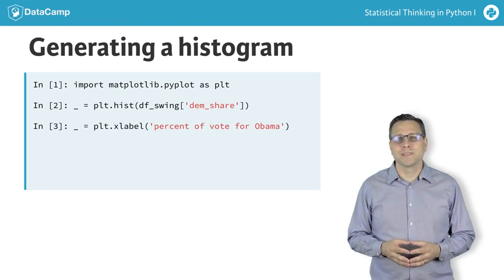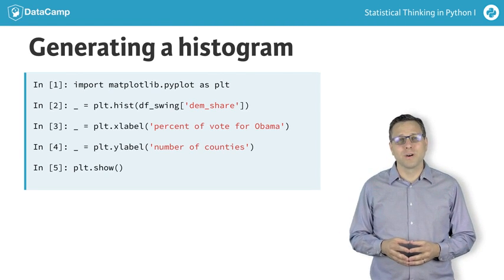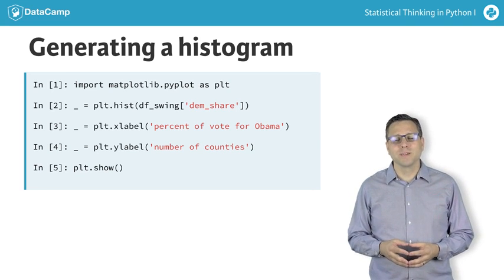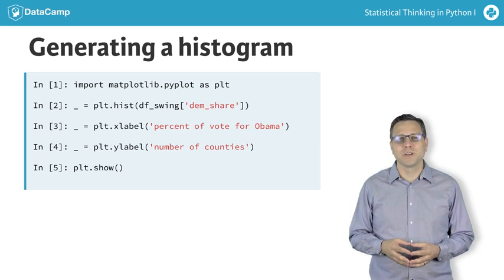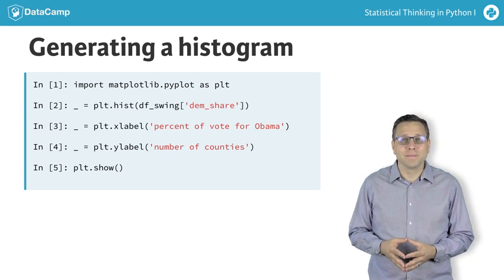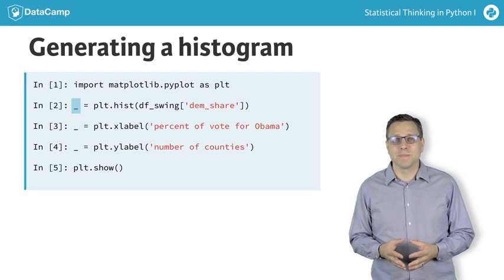We could also have passed it a numpy array with the same data, and it works just fine. In fact, for this course, you can use data frames and numpy arrays interchangeably. Note that plt.hist returns three arrays that I am not interested in — I only want the plot. I therefore assign a dummy variable called underscore to them, which is common practice in Python.